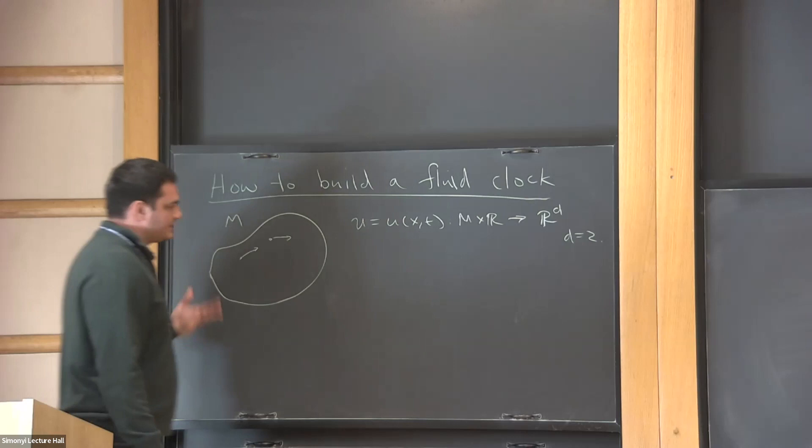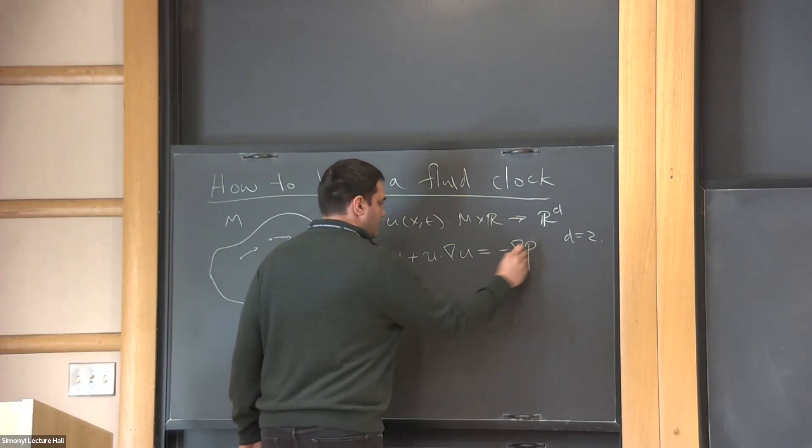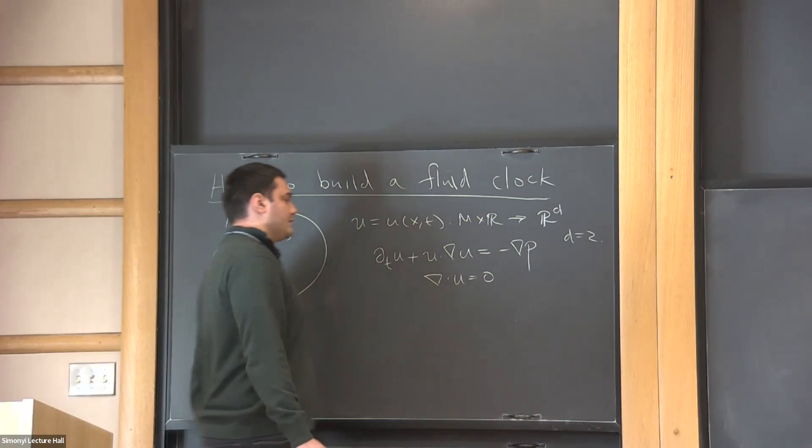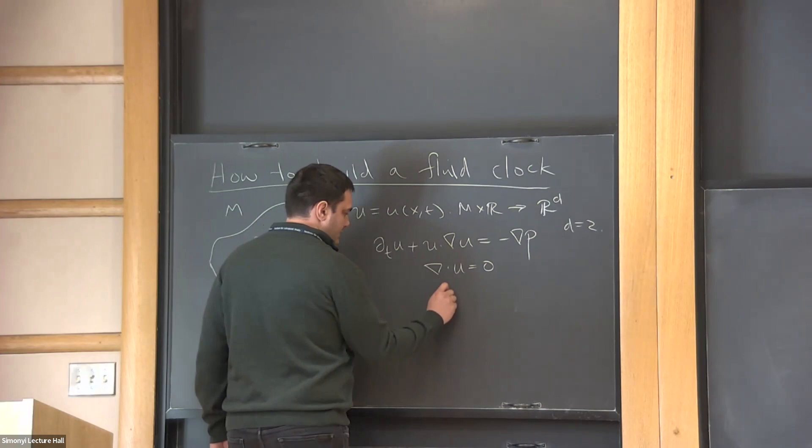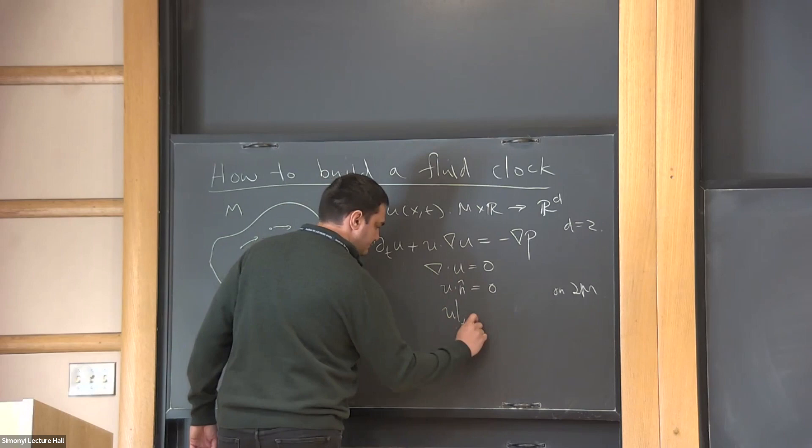This vector field is moving according to the incompressible Euler equation. The rate of change is the material advection by itself, forced by a pressure. The pressure is a scalar field maintaining this incompressibility constraint that the velocity be divergence free for all time. This container is solid, so there's no flux of fluid on the boundary. You supply it with initial condition at time zero, which belongs to some suitable phase space for the fluid.